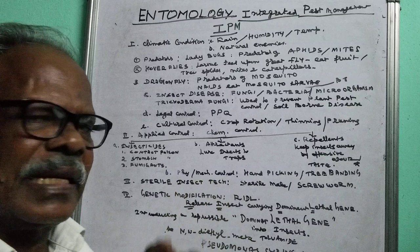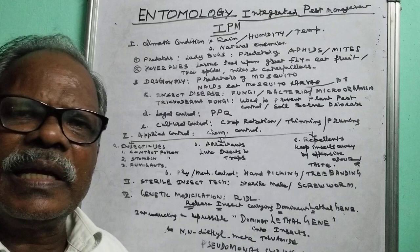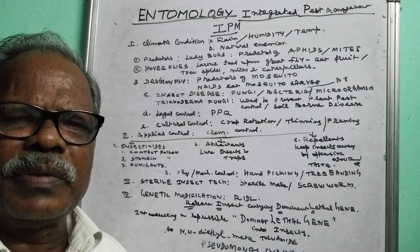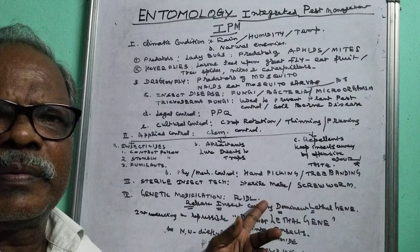Then sterile insect technique. We make insects sterile — through radiation, we make male insects sterile. Whenever they mate with the female, the eggs will not hatch. By repeated mating with sterile males, the insect population will be under control.